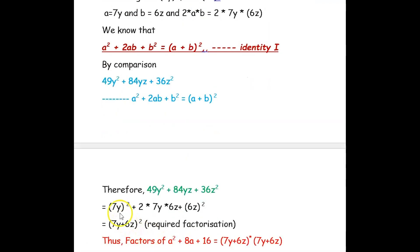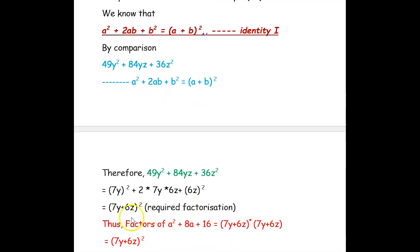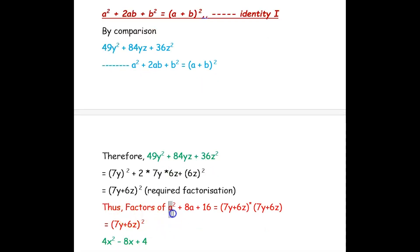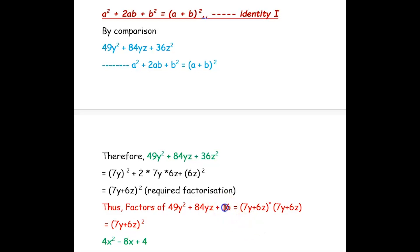Here a is 7y, so we have (7y) squared plus 2 into 7y into 6z. Multiplying: 2 into 7 is 14, and 14 into 6 is 84, giving 84yz. And (6z) squared gives 36z squared. Using the identity, we can factorize it as (7y + 6z) whole squared. Thus, the factors of 49y squared plus 84yz plus 36z squared is (7y + 6z) whole squared.